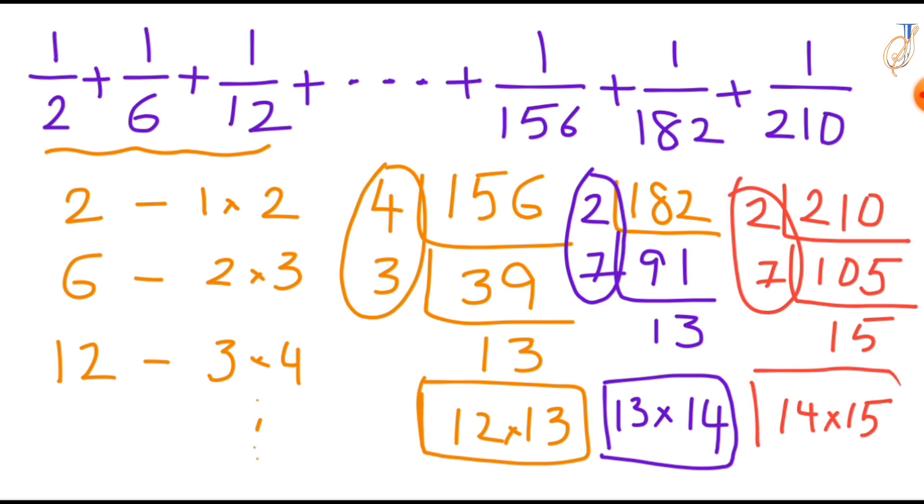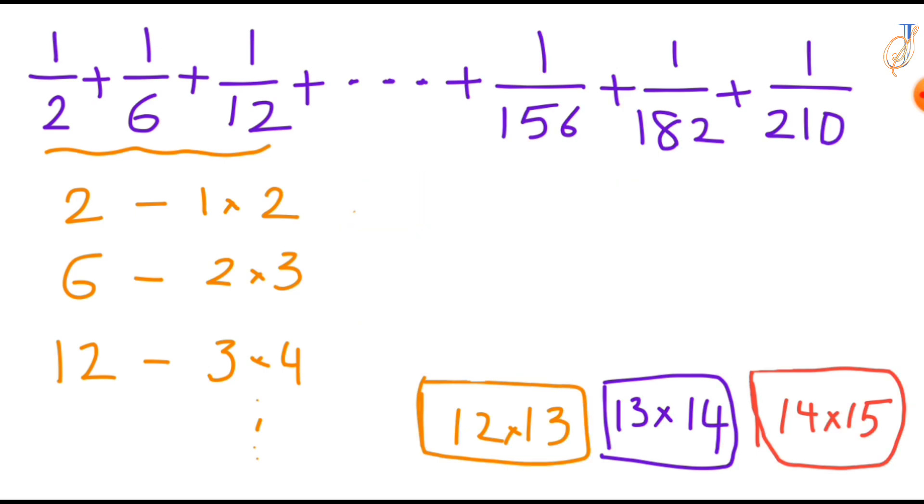What do you observe here? The last three terms denominators are also products of consecutive integers. Instead of 156 we can write it as 12 times 13, instead of 182 we can write it as 13 times 14.